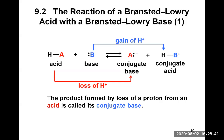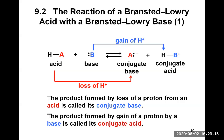Now the base — if we look at the base B with the lone pair, when it gains and accepts a proton, it becomes HB with a positive charge. The base forms a bond with the hydrogen using that lone pair it had, so there is a single bond now between H and B. The hydrogen came with a positive charge, so the overall HB has a positive charge as well. HB+ is the conjugate acid of the base — the product formed by the gain of a proton by a base is called the conjugate acid. The only difference between HB+ and B is an H+.